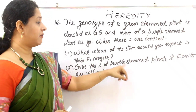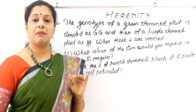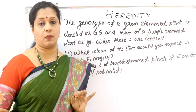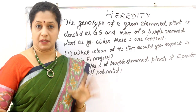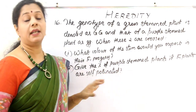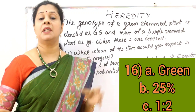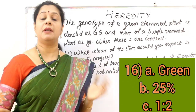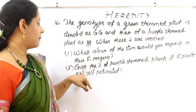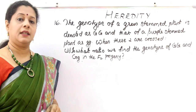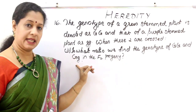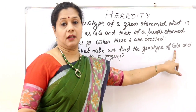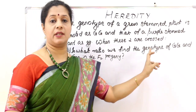If the F1 plants are self-pollinated, we get F2 plants. The phenotypic ratio is 3 to 1 — three green stemmed to one purple stemmed. The percentage of purple stemmed plants is 25% and green stemmed plants is 75%. The genotypic ratio in the F2 progeny is: capital G capital G (1) to capital G small g (2) to small g small g (1) — that is 1 is to 2 is to 1.